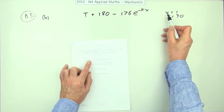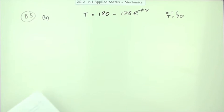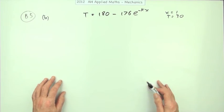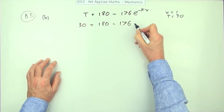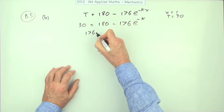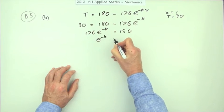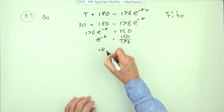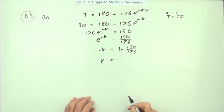Part B for two marks. After one hour, so x equals 1, the temperature of the turkey in the oven is 30 degrees Celsius. Substituting into our expression: 30 equals 180 minus 176 e to the negative k, so 180 minus 30 is 150, giving e to the negative k equals 150 over 176. Taking logs: negative k equals ln(150 over 176), so k equals negative ln(150/176), which is the same as ln(176/150).